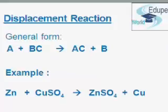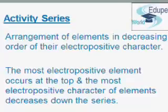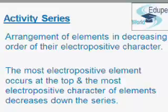The ability of an element to displace another element from a compound is easily understood by the activity series of elements. The arrangement of elements in the decreasing order of their electropositive character is called the activity series of elements. In the activity series the most electropositive element occurs at the top, and the electropositive character of elements decreases down the series.